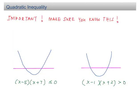Quadratic inequality comes out every year in past SPM exams, so it's very important you understand it. Before sketching the curve, make sure the coefficient of x squared is more than 0 so that the curve is a U-shape. Many students make mistakes at the final step when determining the range. Look at these two reference examples: the first graph crosses the x-axis at negative 7 and 5.